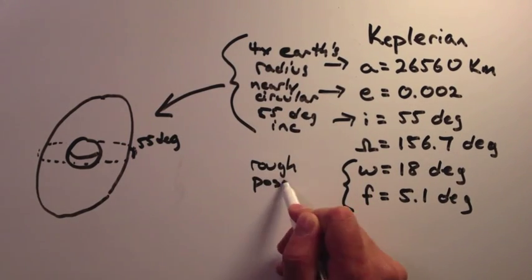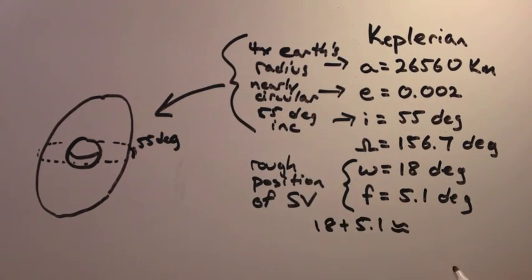In addition, you can add the argument of perigee and the true anomaly to get an approximate location of the satellite. As you can see here, it's very easy to get a good idea of the shape of the orbit from Keplerian elements. It's not quite so intuitive with the Cartesian elements.